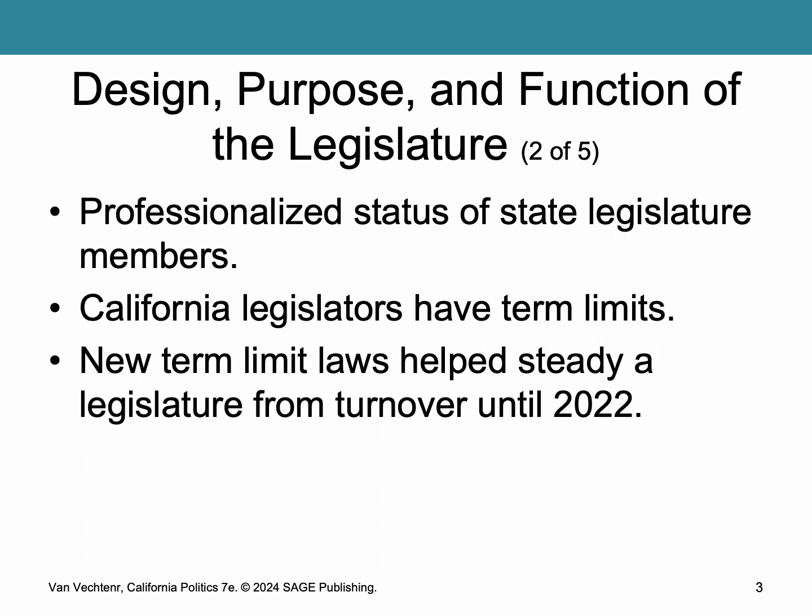California has a professionalized state legislature, meaning members are full-time employees with staff and a budget. They run extensive campaigns and meet year-round. California has term limits: since 2012, members can serve a total of 12 years in a single house or split their time between the Assembly and the Senate. Steady turnover began in 2022 as legislators started hitting their limits.